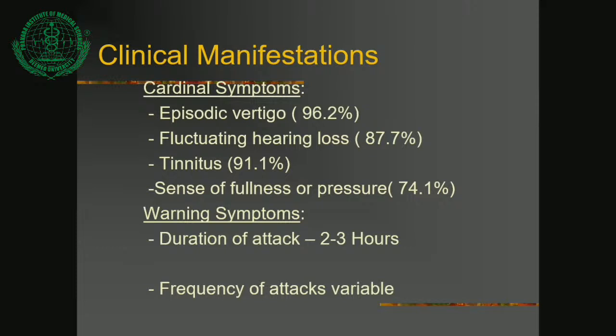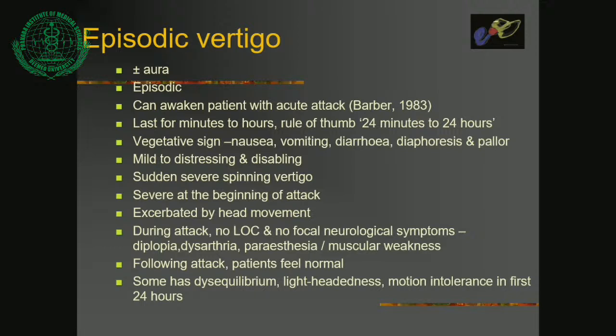Key points on episodic vertigo: it lasts for minutes to hours, with the rule of thumb being 24 minutes to 24 hours. It is associated with nausea, vomiting, diarrhea, diaphoresis, and pallor. Importantly, during an attack there is no loss of consciousness and no focal neurological symptoms such as diplopia, dysarthria, paresthesia, or muscular weakness.